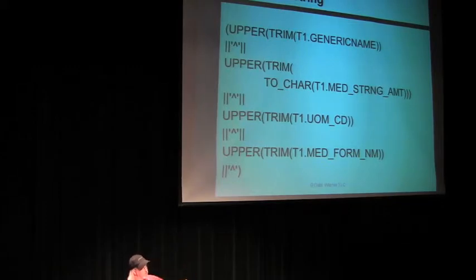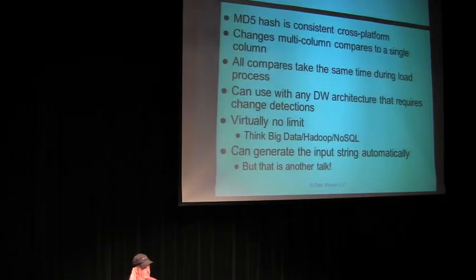And so this is actual code out of one of our algorithms that comes out. As you can see, we did an upper trim on a column, concatenate that with a caret. Another upper trim on a to_char to string amount because that was a numeric column, so we did a to_char on it. And then another upper trim and another upper trim. And then we always ended it with a caret. And so far, no dupes. When we didn't do those carets, we got dupes all the time.